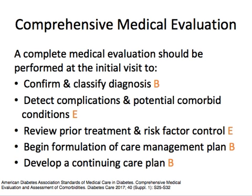When evaluating a new patient with type 1 DM, at the first visit you must confirm and classify the diagnosis, screen for complications and potential comorbid conditions at the time of diagnosis, review prior treatment and risk factor control — including obesity, smoking, alcohol intake, polycystic ovarian syndrome, and acanthosis nigricans on physical examination — ask about other endocrinopathies, then formulate a care plan and develop a continuing care plan.